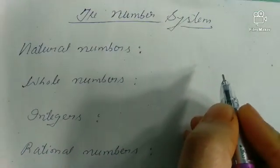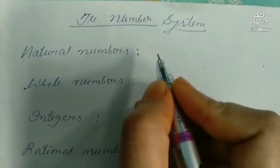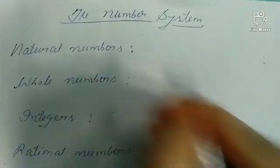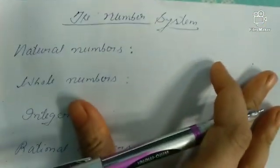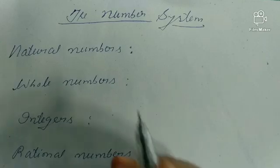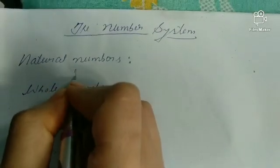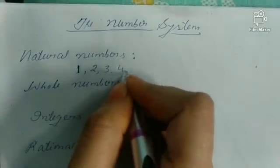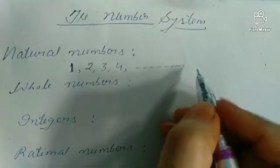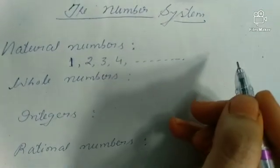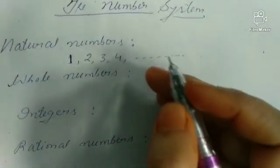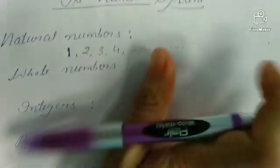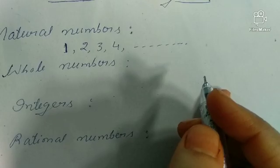So first of all, let us discuss whether you know about the natural numbers. What are the natural numbers? All the counting numbers are natural numbers. The smallest natural number is 1. Counting numbers start from 1, 2, 3, 4 and so on up to infinity. Infinity means the process is going on — so 1, 2, 3, 4, 5, 6 up to infinity. All these are known as natural numbers.